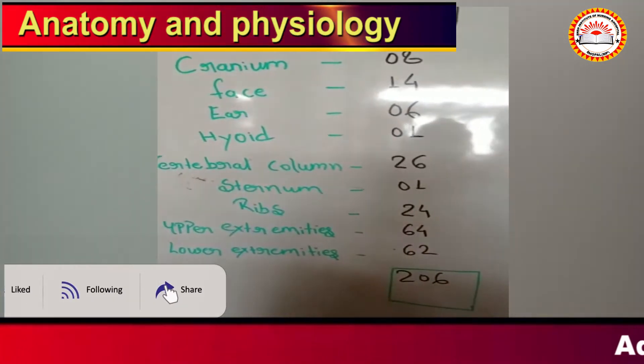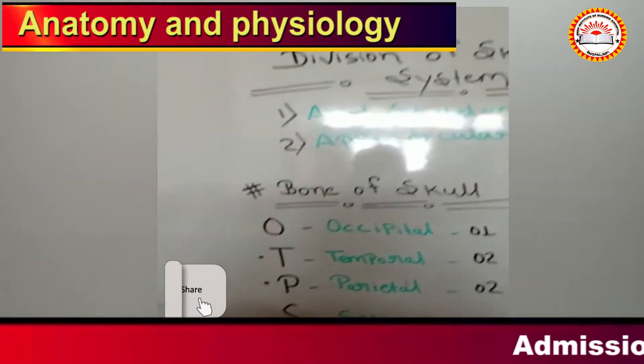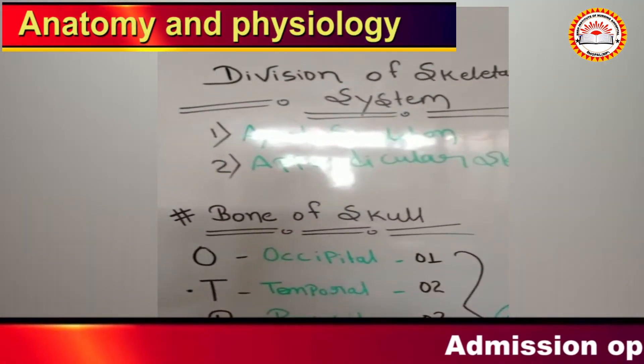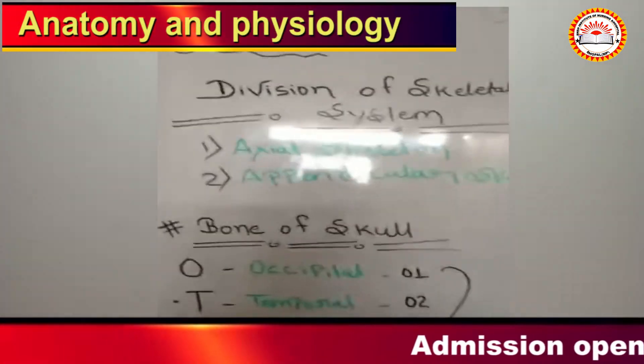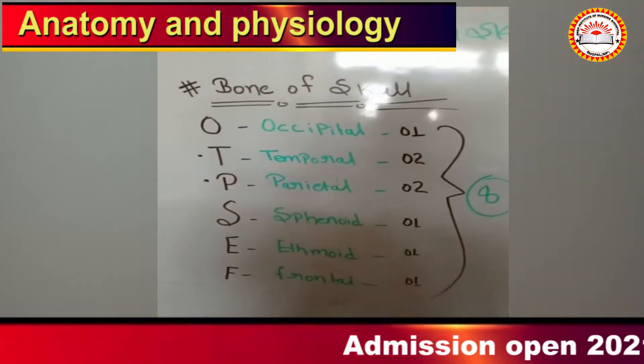So the total number is 206 bones. You can see the division of the skeletal system — axial skeletal and appendicular skeletal.